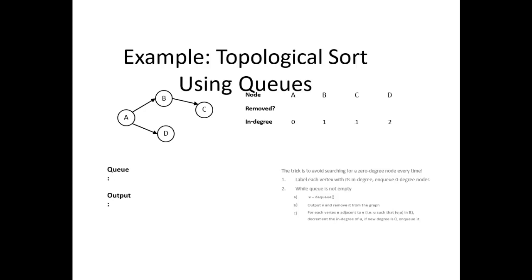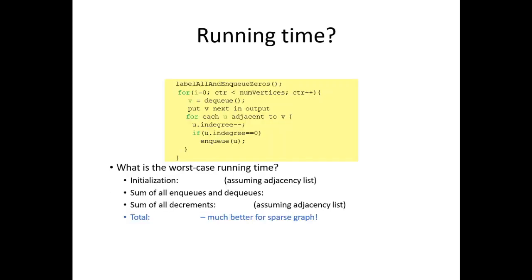We have A, B, C nodes, D. We need to check for running time now. The total of this pseudocode will be much better for sparse graphs. That's much better for sparse graphs.